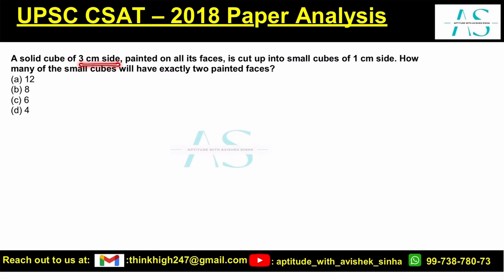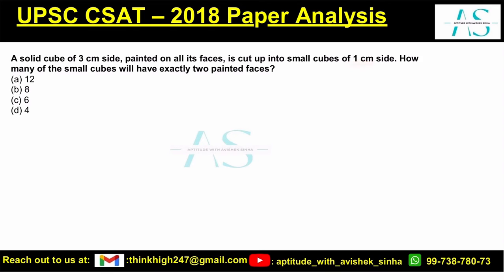A solid cube of 3 cm side is painted on all its faces. It is then cut into small cubes of 1 cm. How many of the small cubes will have exactly 2 faces painted?